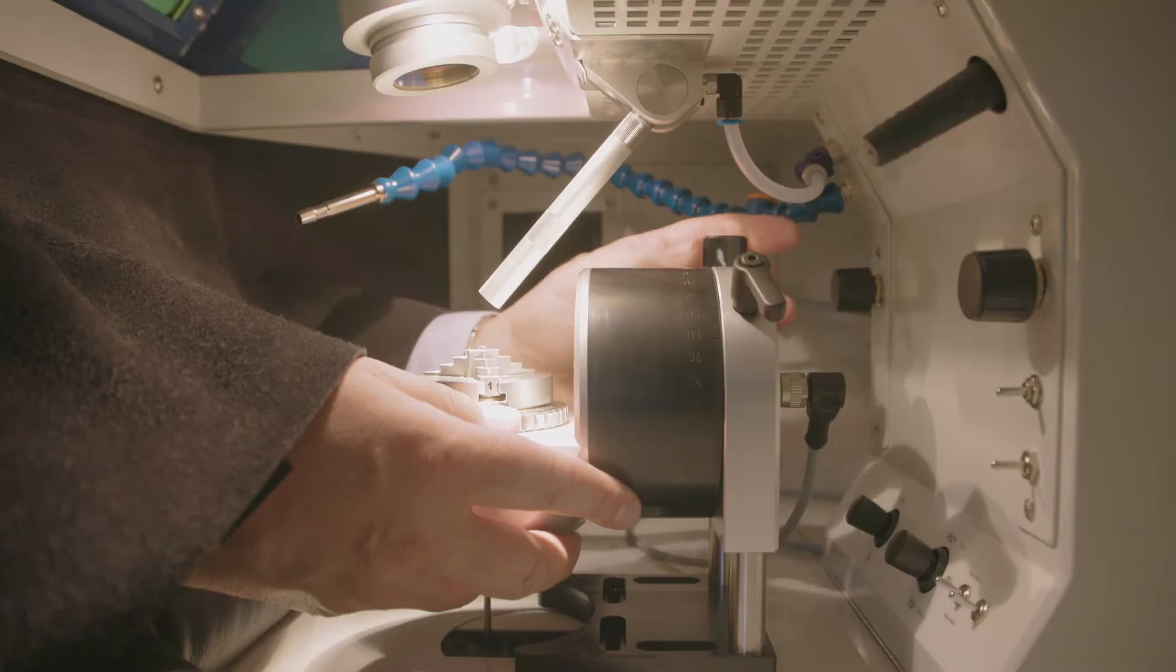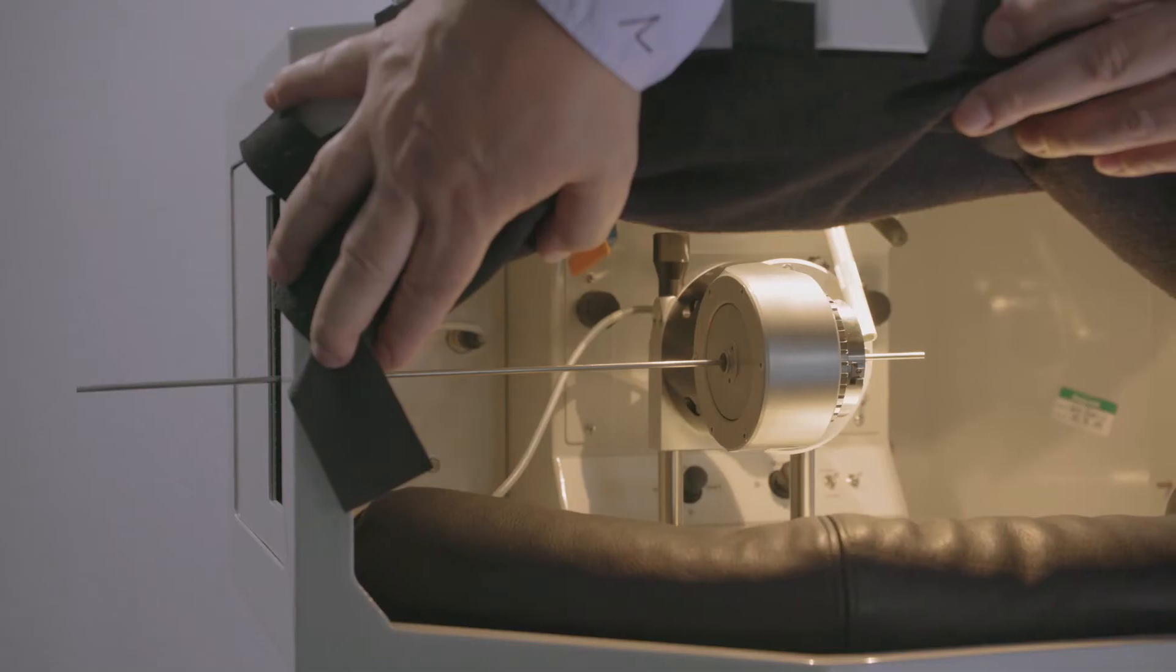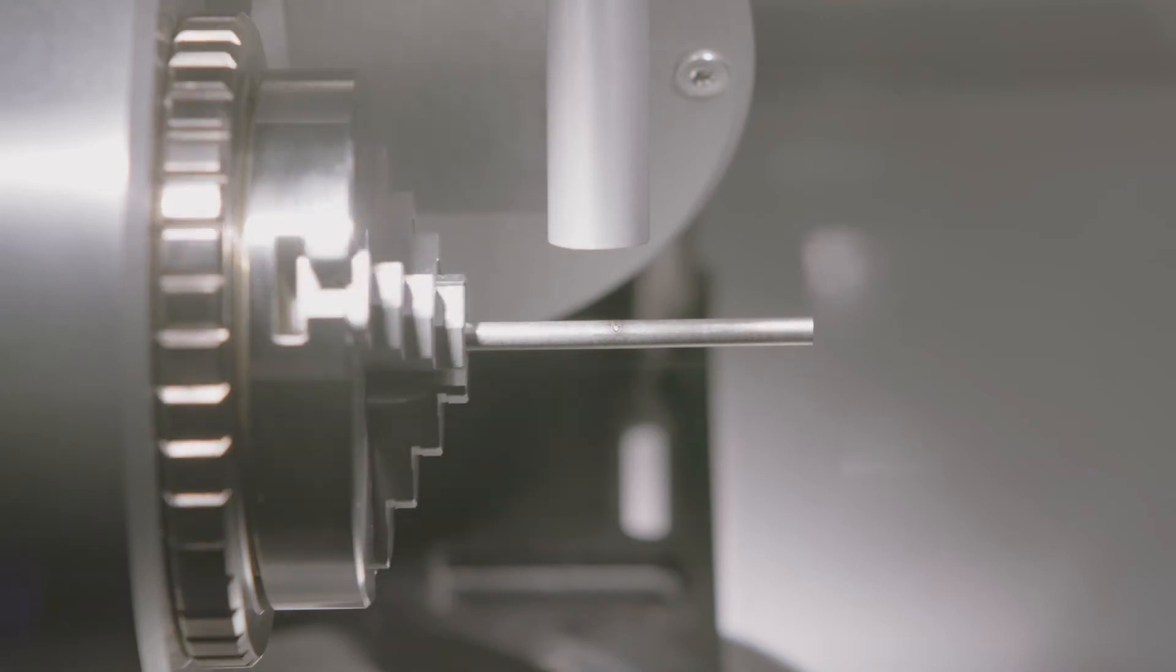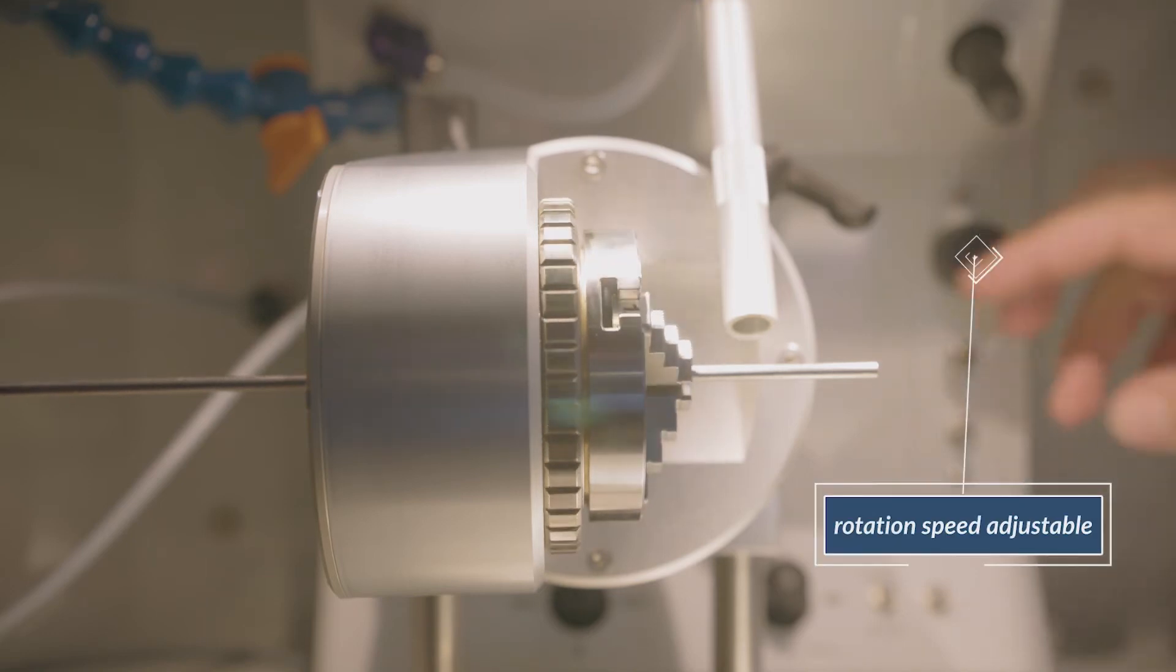You can weld round parts vertically, horizontally, or at any angle in between. The rotation speed and its direction is adjusted by a rotary switch.